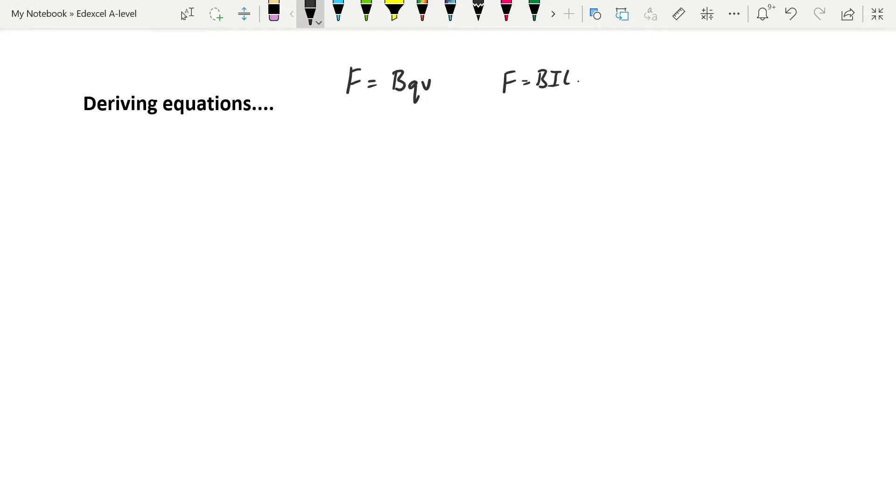Now clearly these two equations are connected together. You need to be skilled at deriving equations from one to another, being able to connect all of your knowledge from A-level physics together. So let's see if we can get one of these equations from the other. Let's start with trying to get f is equal to bil from f is equal to bqv.